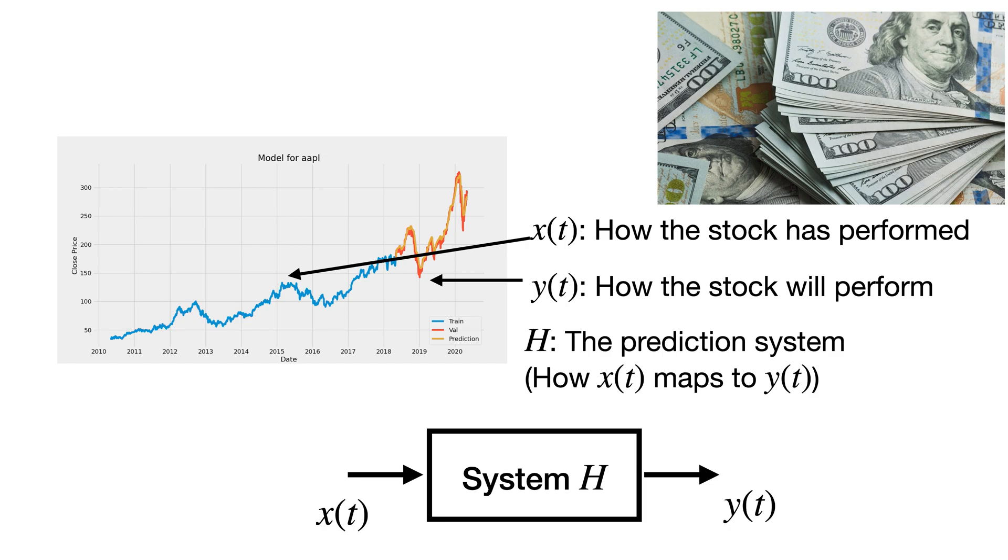When we design H, we should probably take into account past stocks and how they performed so we can test the effectiveness of our prediction system H. Our goal is to design H to make y as accurate as possible. Perhaps we'd even want to design our system so it updates its prediction in real time as the stock performs either well or not.